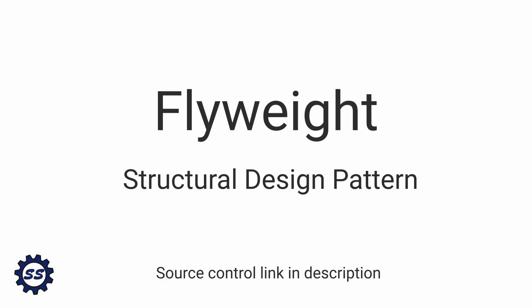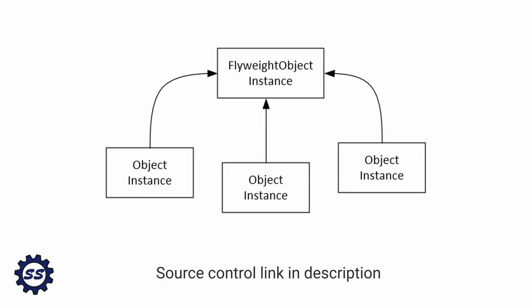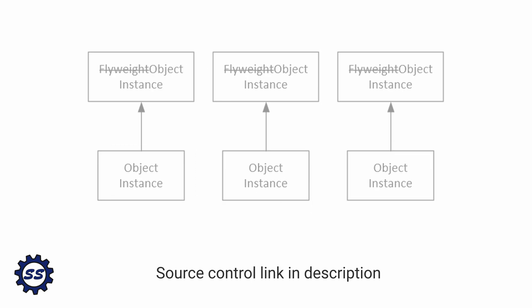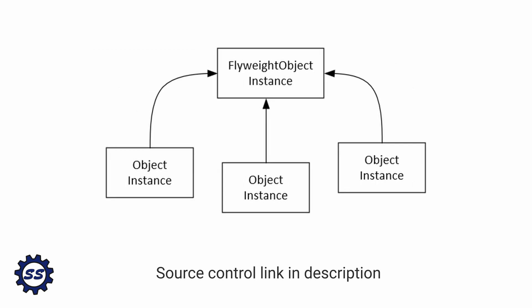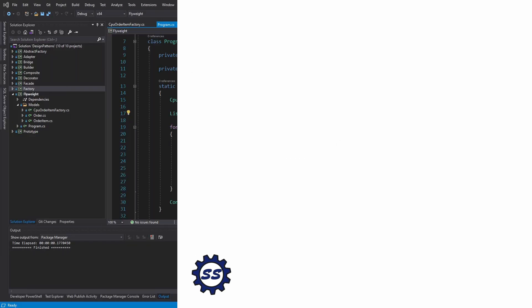The flyweight pattern is a structural design pattern that involves sharing an object in order to reduce memory usage. For this demo, we're going to first demonstrate this application without the flyweight pattern and see what our memory usage is, and then we're going to implement the flyweight pattern and see how much our memory usage has decreased.